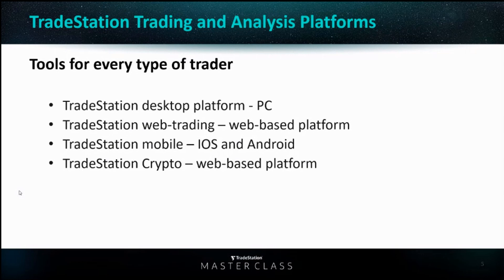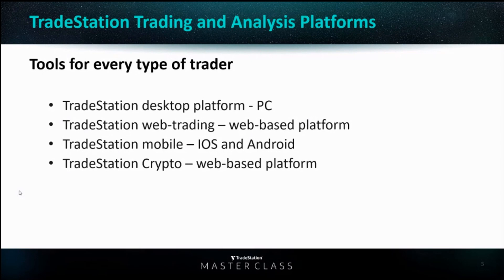The analysis tools within that platform include charting, which is probably the primary analysis tool that most traders use. The desktop platform takes charting to the next level because EasyLanguage is built into every indicator you can put into a chart, which allows you to customize that indicator or even build your own. And then of course we have one of the most amazing tools in the entire industry — RadarScreen. RadarScreen is a real-time scanning tool where every row is essentially a chart. You can apply the same technical indicators to up to 1,000 symbols in real-time, at any bar interval, and sort and rank symbols based on technical criteria.